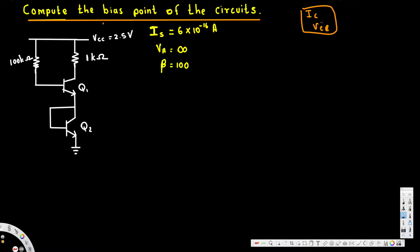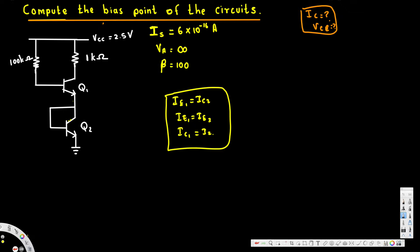Before we solve this problem, there are a few things to consider. Q1 is directly connected to Q2, meaning the emitter current of Q1 equals the collector current of Q2, so IE1 = IC2. Also, the emitter currents are almost equal, so IE1 = IE2, and the collector currents are almost equal, so IC1 = IC2.